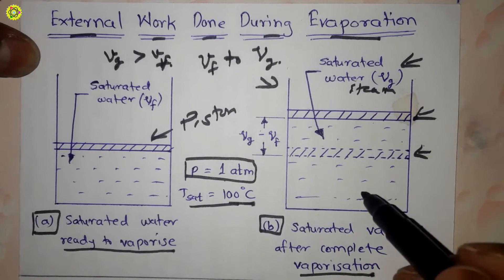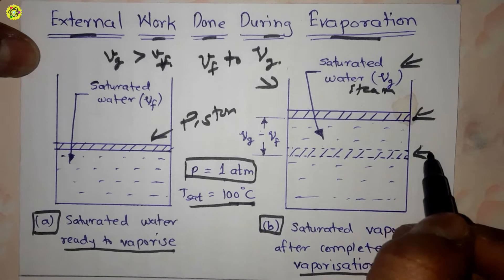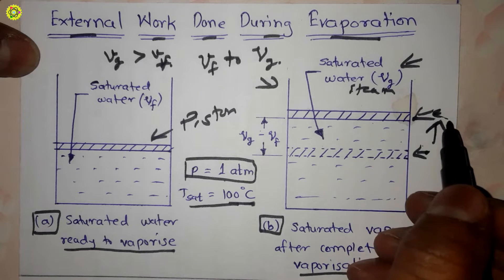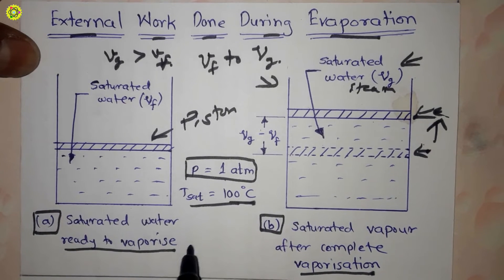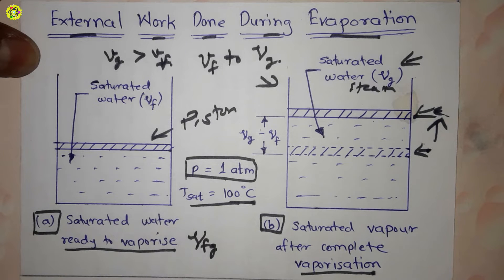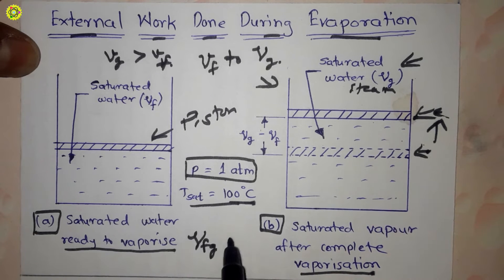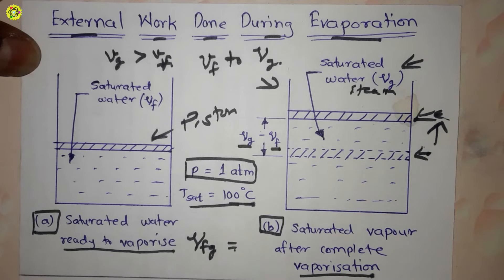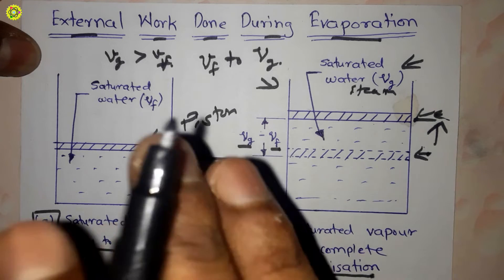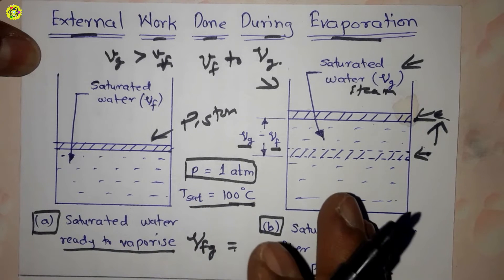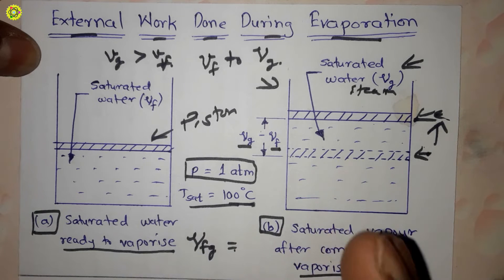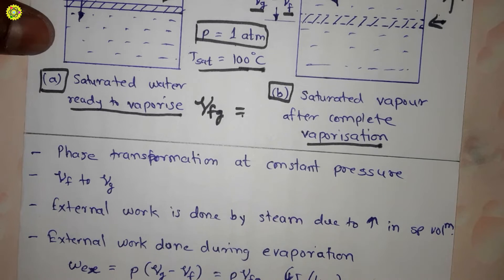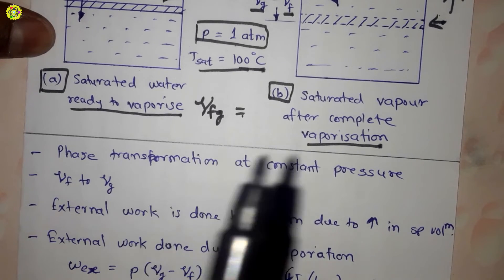Due to the increase in specific volume, the piston moved from this position to this position. We define vfg as the specific volume change of steam during evaporation, which is equal to vg minus vf. So the specific volume change of steam during evaporation equals the specific volume of dry and saturated steam minus the specific volume of moisture or water.